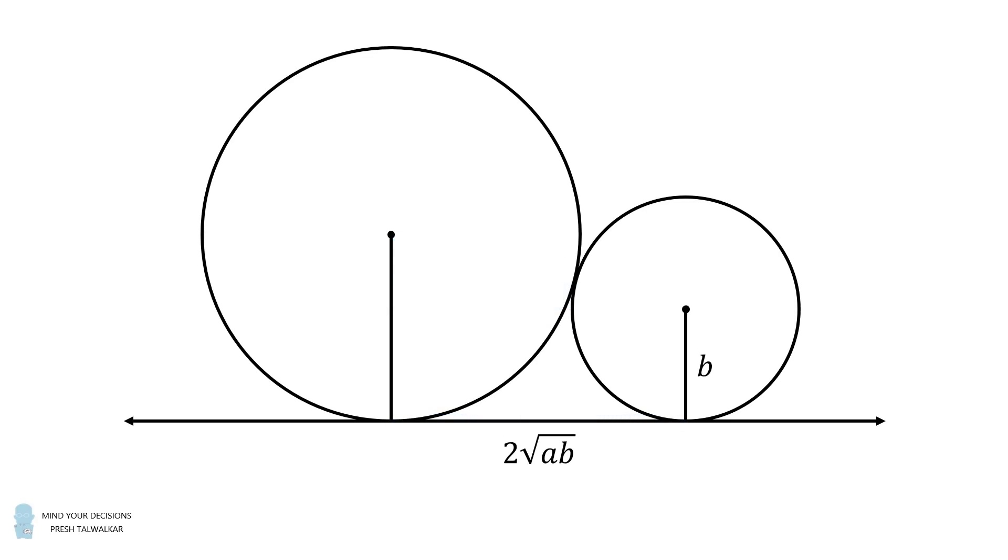To solve the problem, we just recall that one circle had a radius that was equal to 8 inches, and the other circle had a radius that was equal to 2 inches. So we just need to calculate 2 times the square root of 8 times 2. 8 times 2 is equal to 16. Then the square root of 16 is equal to 4. 2 times 4 is equal to 8. And thus, the length of the common external tangent is equal to 8 inches. And that's the answer.